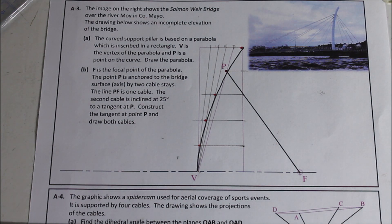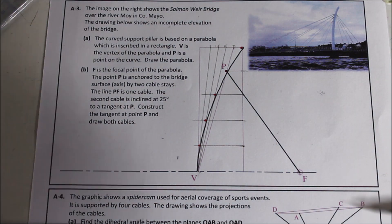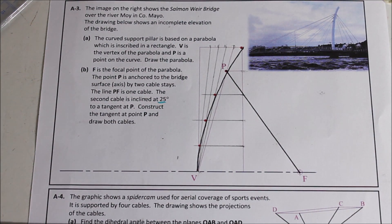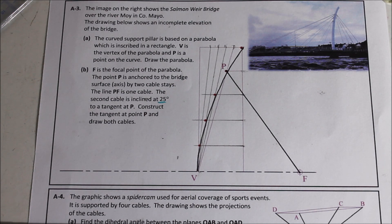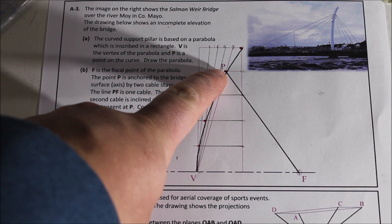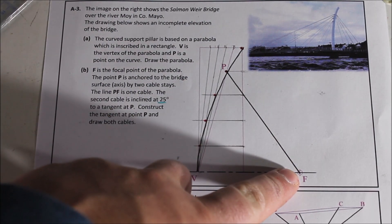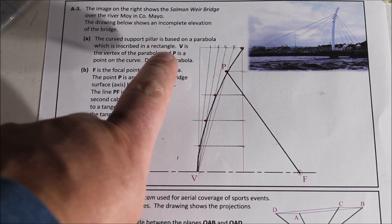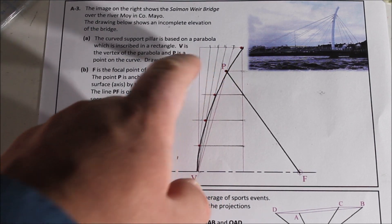So the line PF is one of the cables. Then the second cable is inclined at 25 degrees to a tangent at P. Construct the tangent at point P and then draw both cables. So to get a tangent to the parabola what we must do is join the point where the tangent is coming back to the focal point which is done for us. After that then you draw a line perpendicular to the directrix of the parabola from the point.